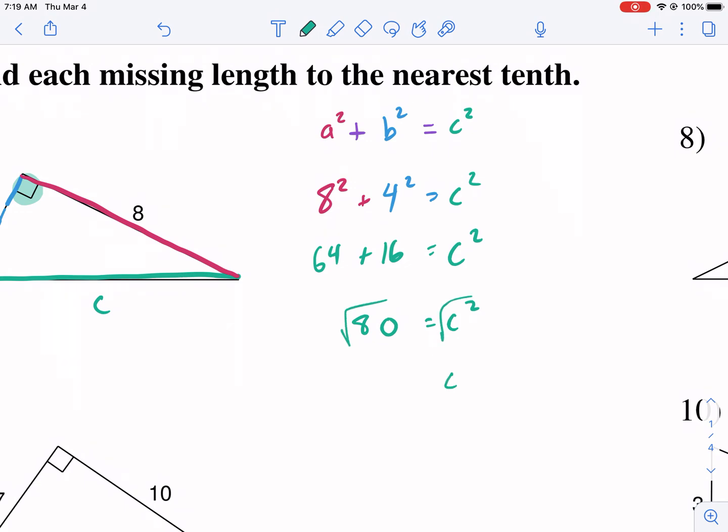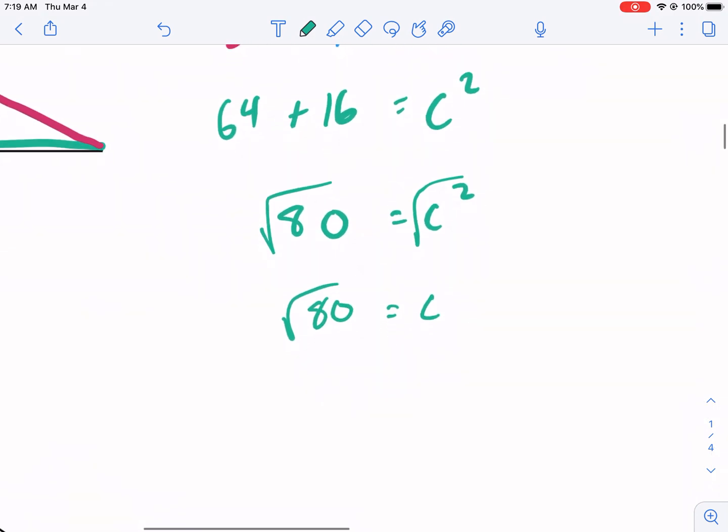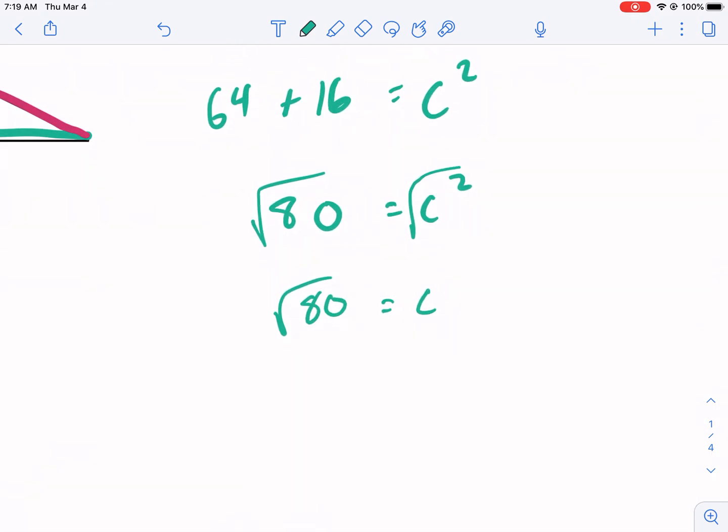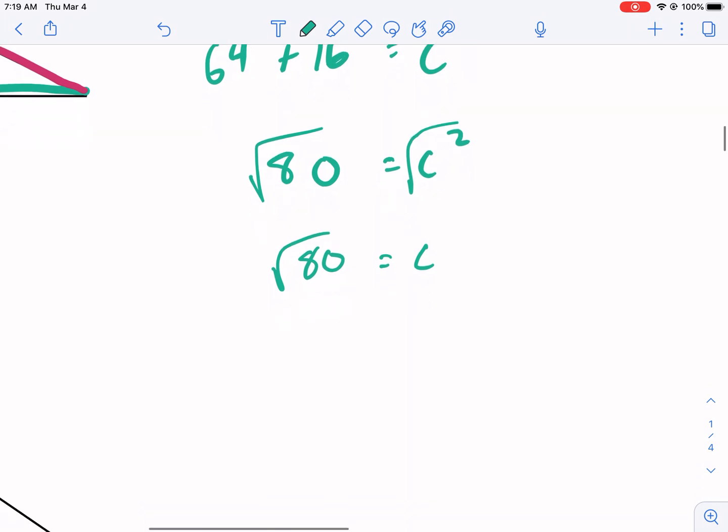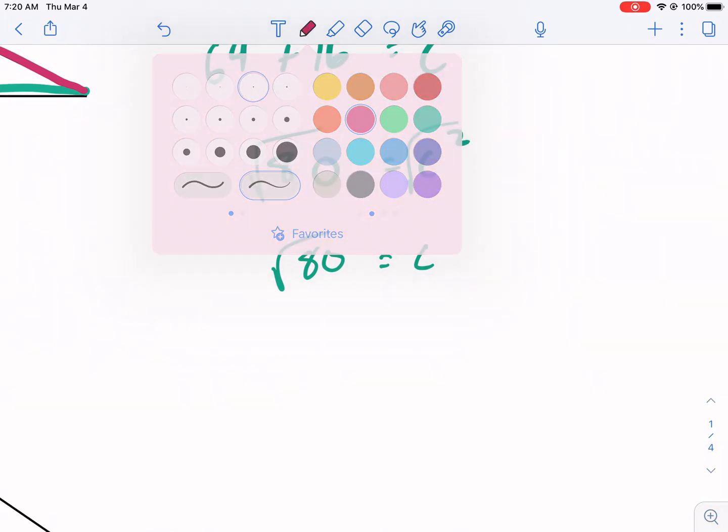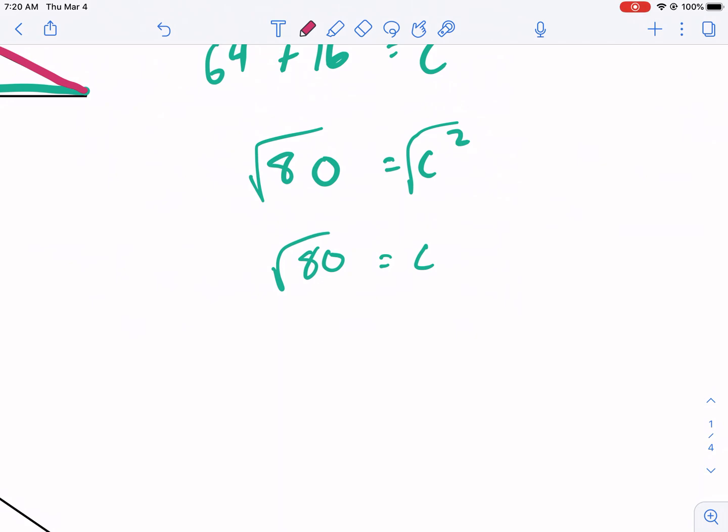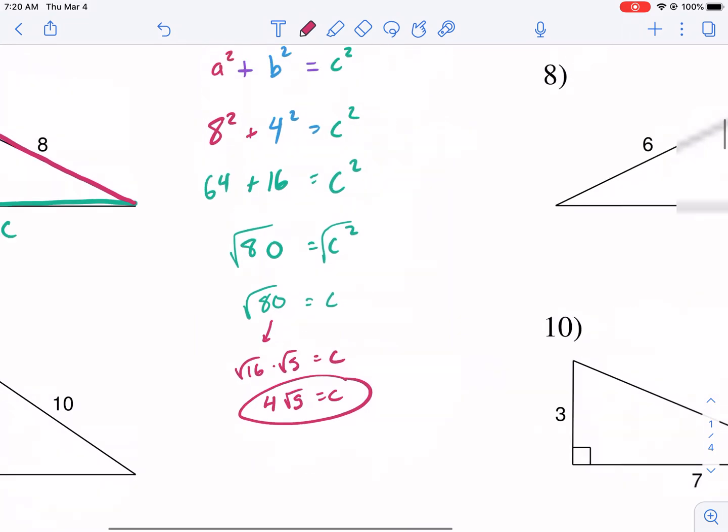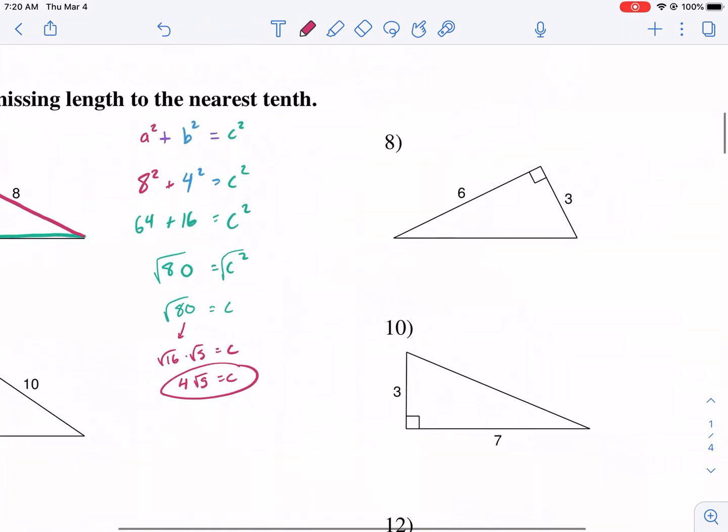Now, technically, this is a correct answer. Now, if you're in like a chapter 8 or you're one of those geometry students, honors geometry students, whatever, and your teacher wants you to simplify this, I would suggest watching my videos on simplifying radicals. I can do that real quick for you. I think 16 is a factor of 80. Let me just double check. So we could rewrite this as square root of 16 times square root of 5 equals C. So then this would become 4 radical 5 equals C. If you're one of my students, this is what you need to do. Congratulations.